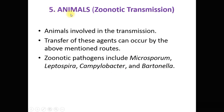The next source is animals and the mode of transmission is zoonotic transmission. Here the pathogenic agent gets transferred from animals to human beings. Examples of zoonotic pathogens are Microsporum, Leptospira, Campylobacter, and Bartonella. These animals either bite the host, or liberate the pathogen in the air, or the animal product is ingested, causing infection in the human host.